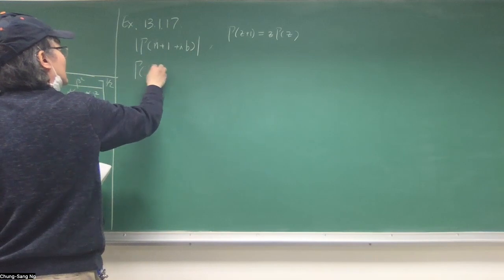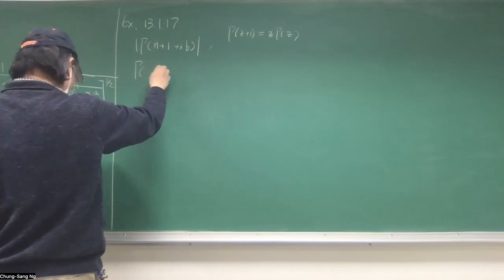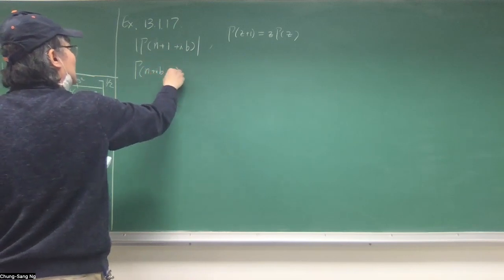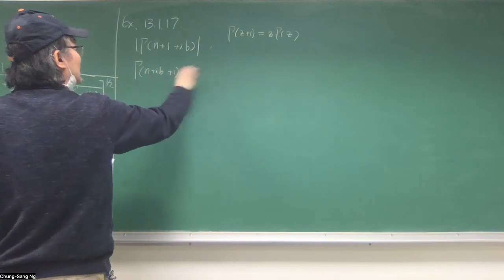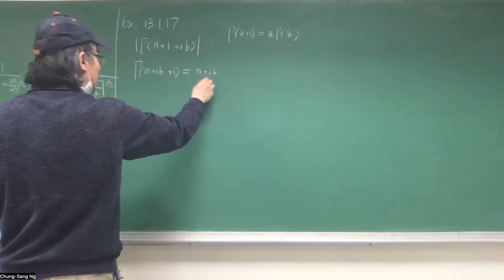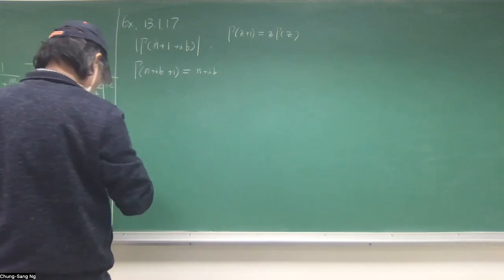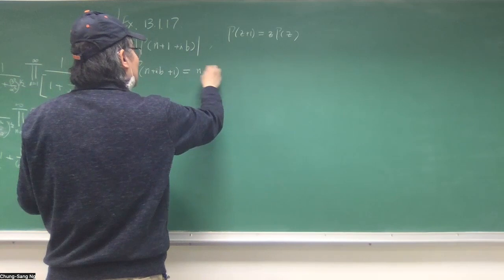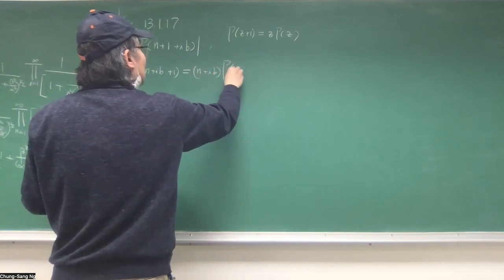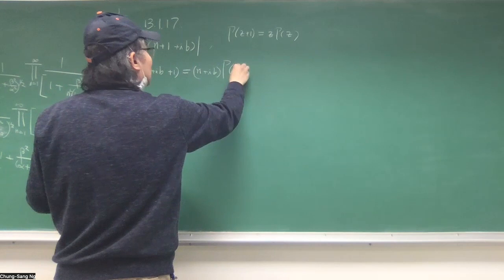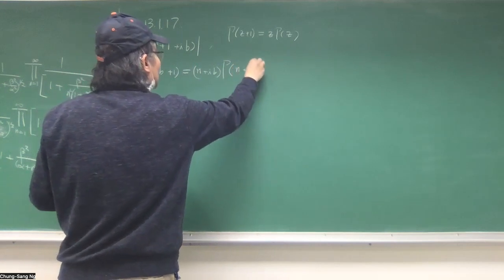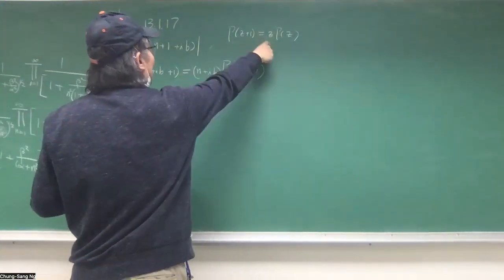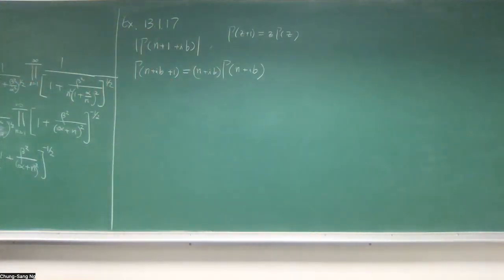It's gamma, so writing in your textbook here is N plus IB. It could be N plus IB, and then multiply by gamma N plus IB. So this is applying this to here, so Z is N plus IB.